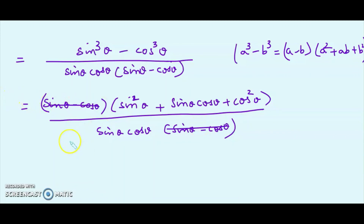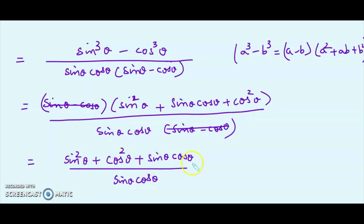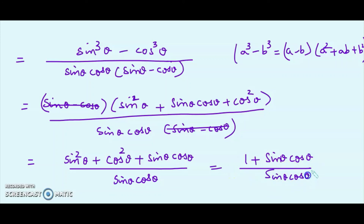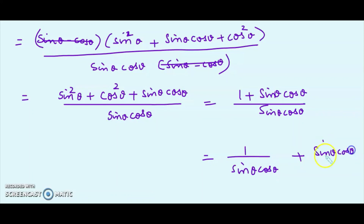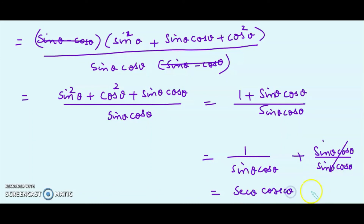After cancellation, we have (sin²θ + sin θ cos θ + cos²θ) / (sin θ · cos θ). Rearranging: (sin²θ + cos²θ) + sin θ cos θ = 1 + sin θ cos θ. Separating the fraction: 1/(sin θ cos θ) + 1, which gives 1/sin θ · 1/cos θ + 1 = cosec θ · sec θ + 1. This matches the RHS, completing the proof.